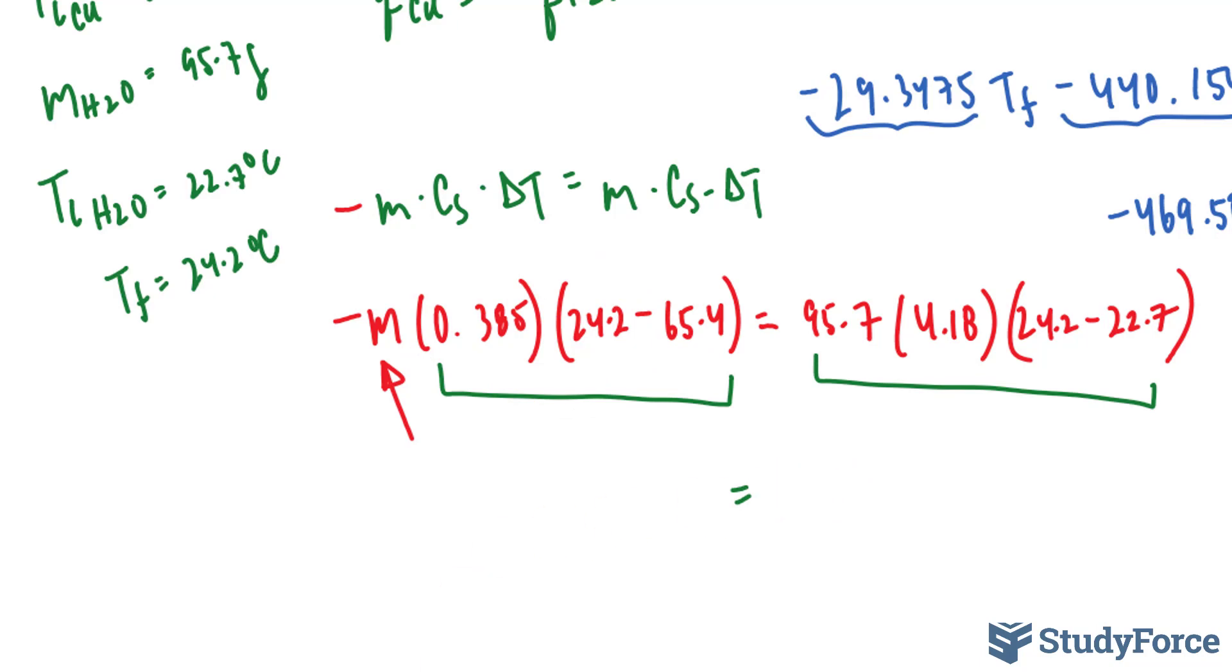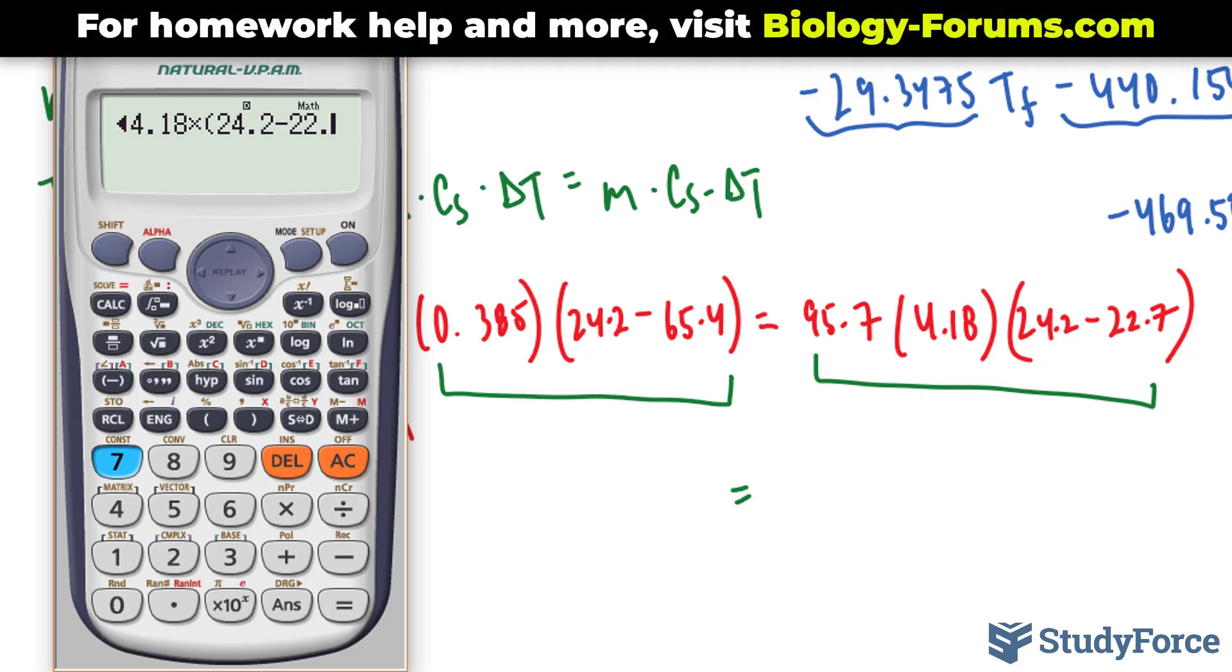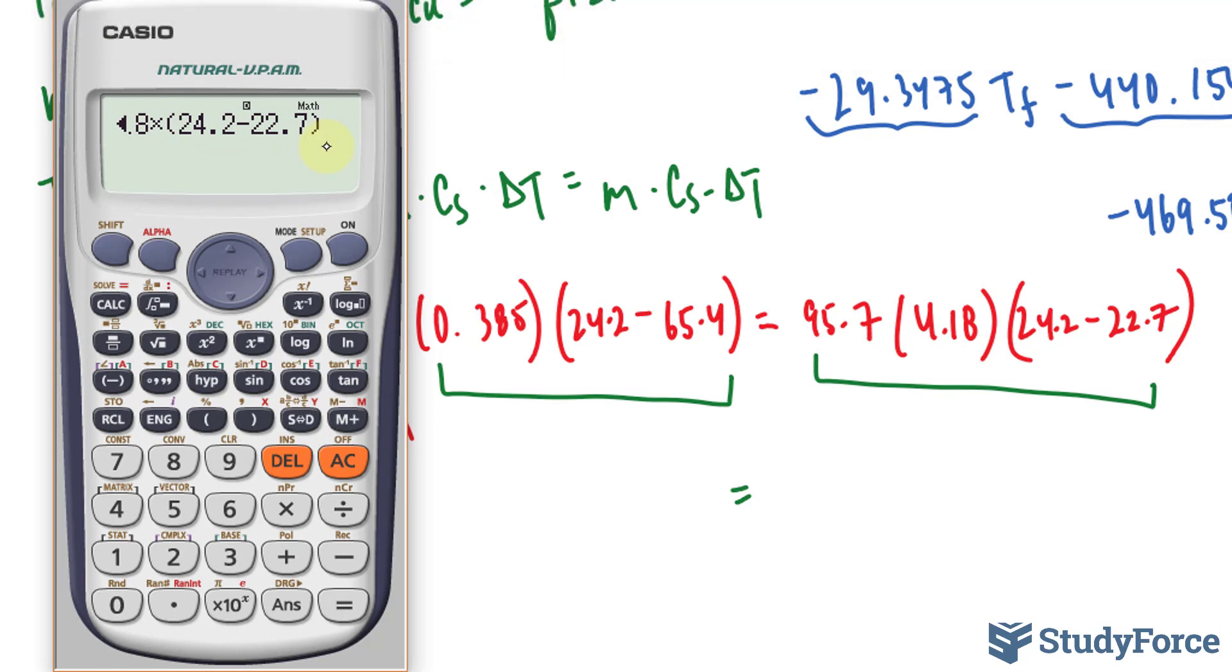So we have, using our calculator, 95.7, I'm starting over here, times 4.18 times 24.2 minus 22.7. Notice that I put these two numbers in brackets. It's important that you do that. It helps your calculator understand what you're doing. So you have 600.039.